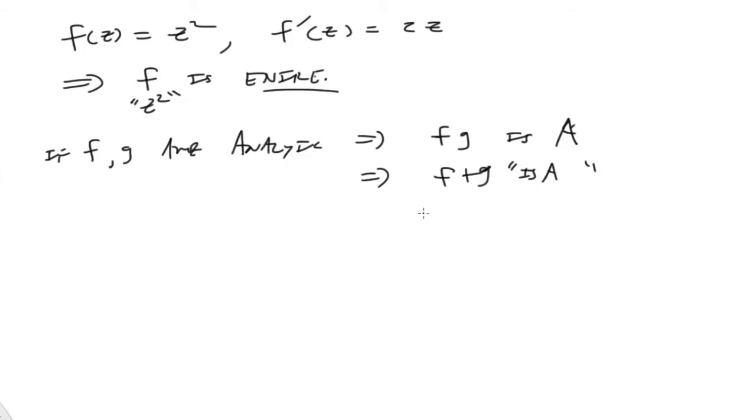Of course, we can have other functions. So c times f is analytic, where c is some complex number, some constant. And then there's also, we have to think about f over g, is analytic only if g is not zero at the point that we're investigating.